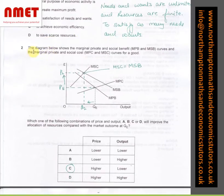In the diagram below shows the marginal private and social benefit MPB and MSB curves and the marginal private and social cost MPC and MSC curves for a good. If you look at the diagram, this is the point where MSC and MSB are equal. That means the combination of price and output will improve the allocation of resources compared with the market outcome at QE.